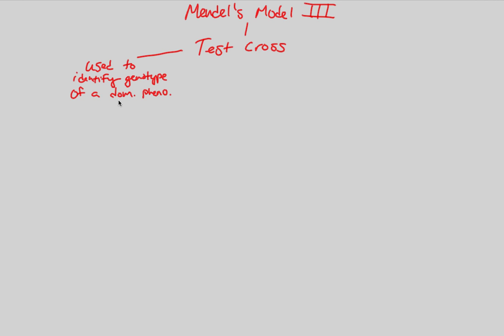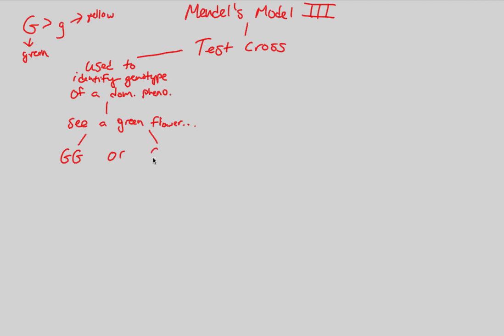What do I mean by this? If you imagine a green flower — you see a green flower outside — and you know that capital G is dominant to lowercase g, this means that if you have any one capital G allele you will be green, and if you have two lowercase g alleles you will be yellow. Yellow is recessive to green. So, how do you possibly know whether or not it's capital G capital G, or capital G lowercase g? You can't see the genes; you can only see the phenotype — the dominant phenotype.